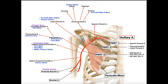The posterior humeral circumflex artery is located roughly near the neck of the humerus, going around the back side. It supplies teres major, teres minor, and the middle and posterior parts of the deltoid — recall that the anterior deltoid is supplied by the deltoid branch of the thoracoacromial artery. This artery also traverses through a space to leave the axilla, specifically the quadrangular space, in order to reach and supply those muscles.